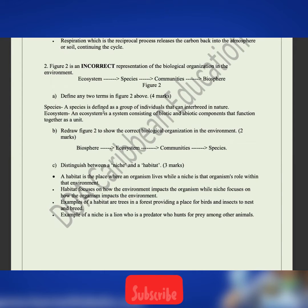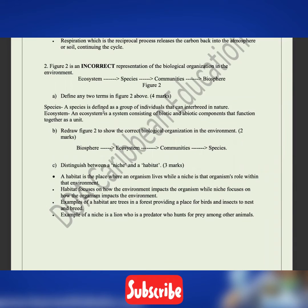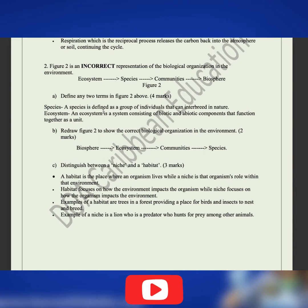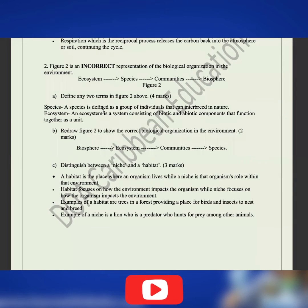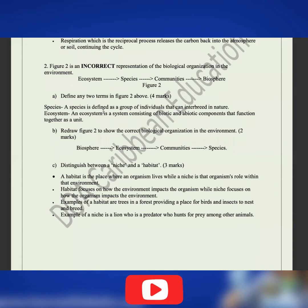Let's jump over to figure two, which is an incorrect representation of the biological organization in the environment. Part A says define any two terms in figure two — you have ecosystems, species, communities, and biosphere. A species is a group of individuals that can interbreed. The ecosystem is a system consisting of the biotic (living) and abiotic (non-living) components that function together as a unit. The community is a group or association of two or more species occupying the same geographical area at the same time. The biosphere is all the ecosystems on Earth where life exists.